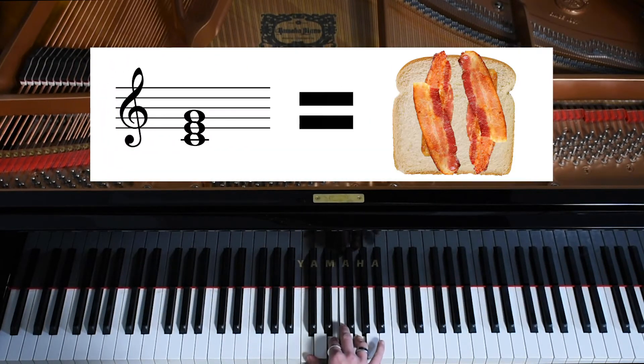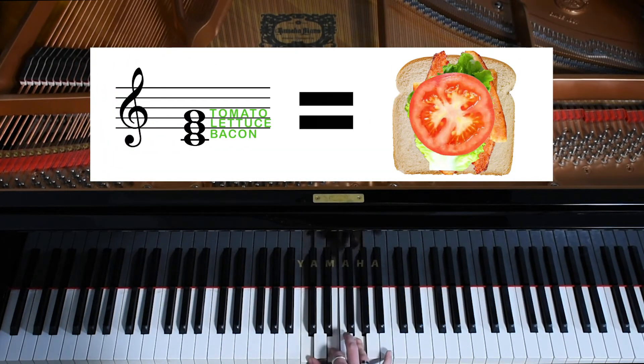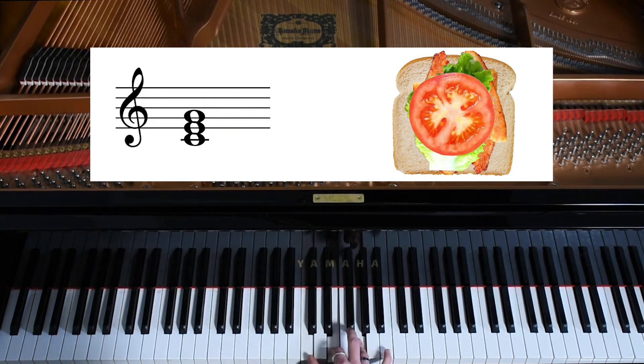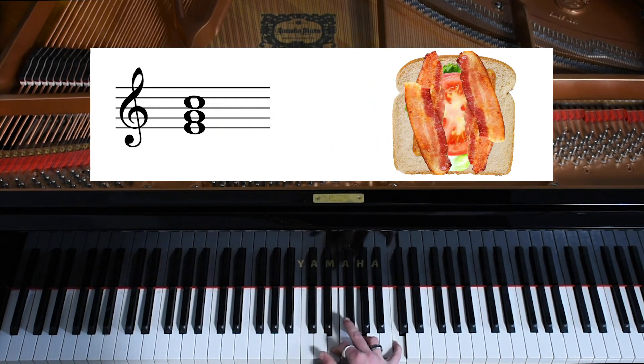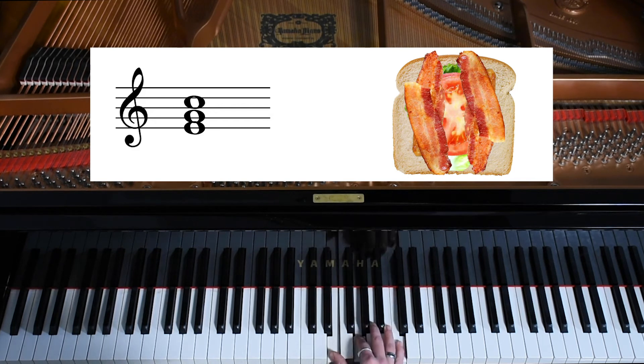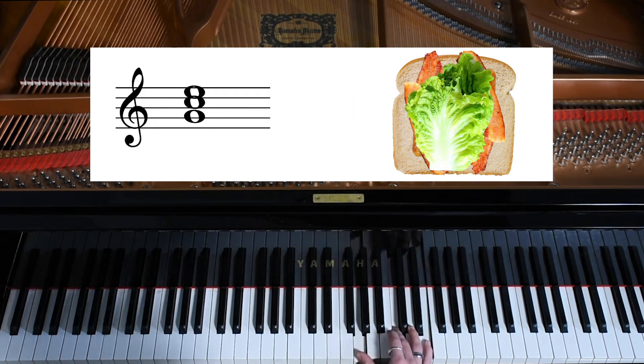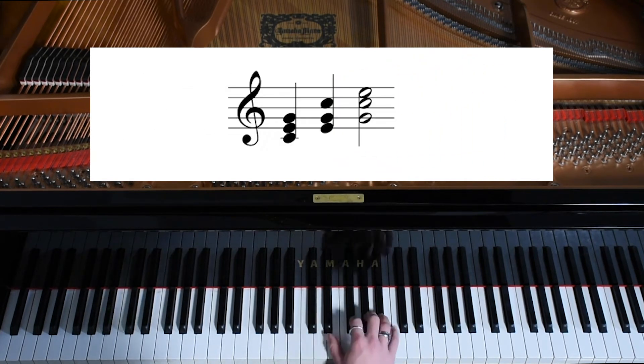Let's pretend a C major chord is like a bacon-lettuce-tomato sandwich. We're just going to move how we stack the bacon-lettuce-tomato sandwich. What if we put the bacon on top of the sandwich? Now we have a lettuce-tomato-bacon sandwich. What if we put the lettuce on top of that? Now we have a tomato-bacon-lettuce sandwich. These are the inversions.